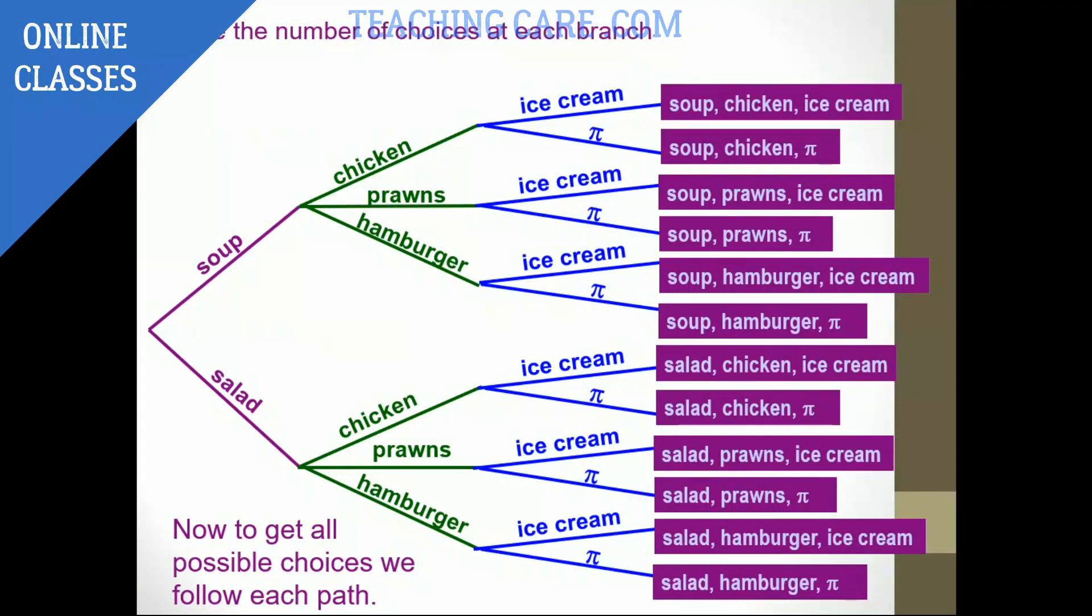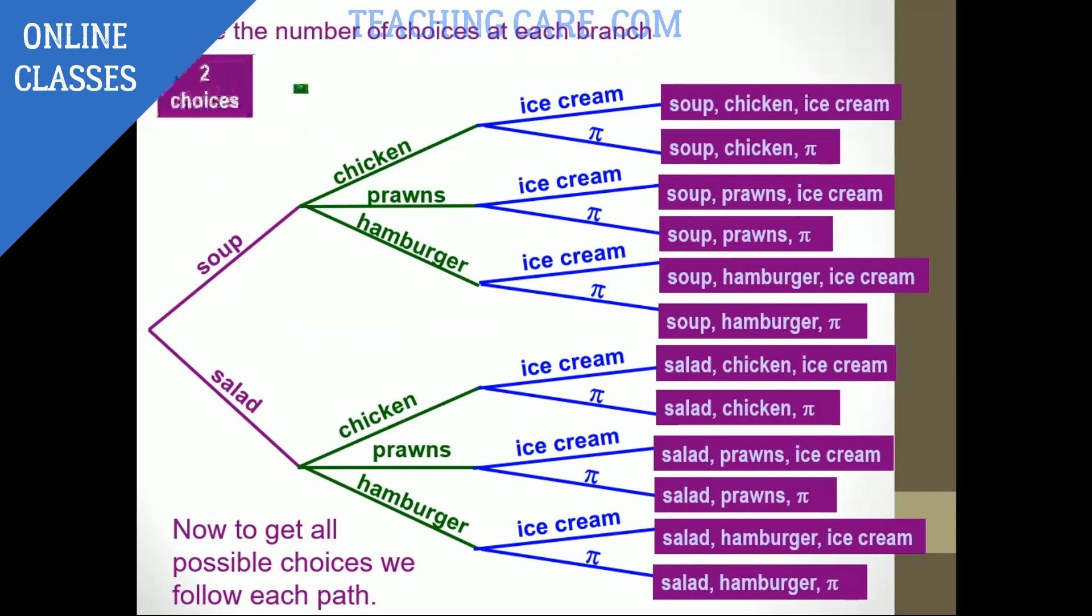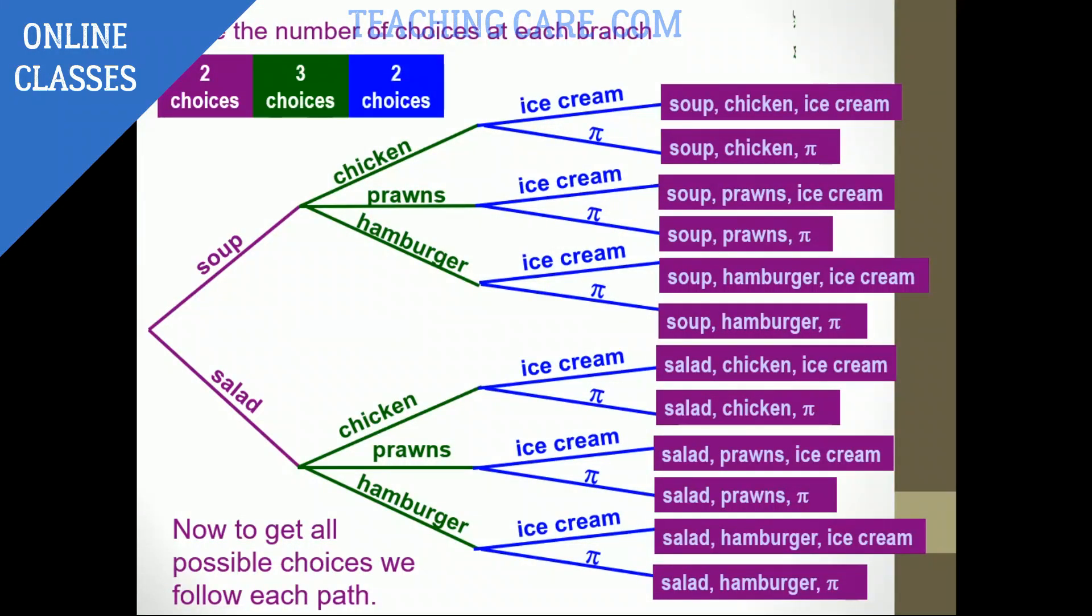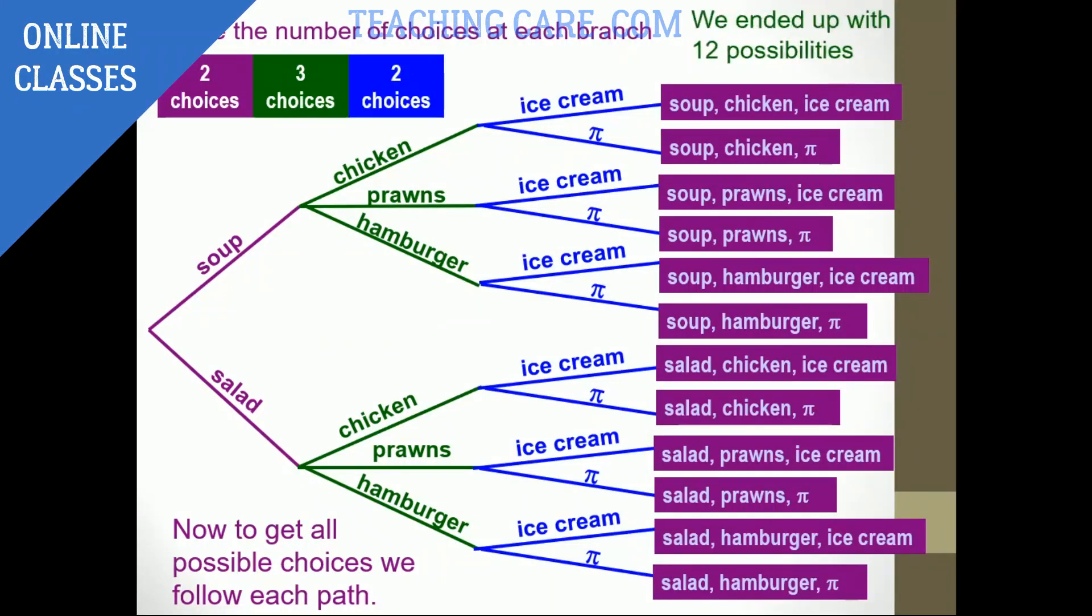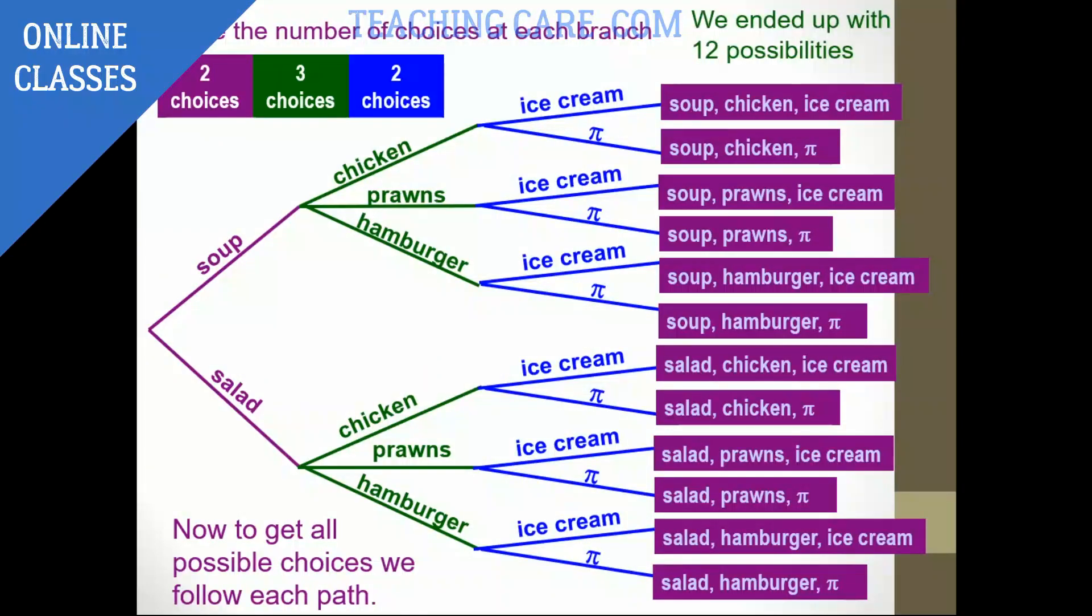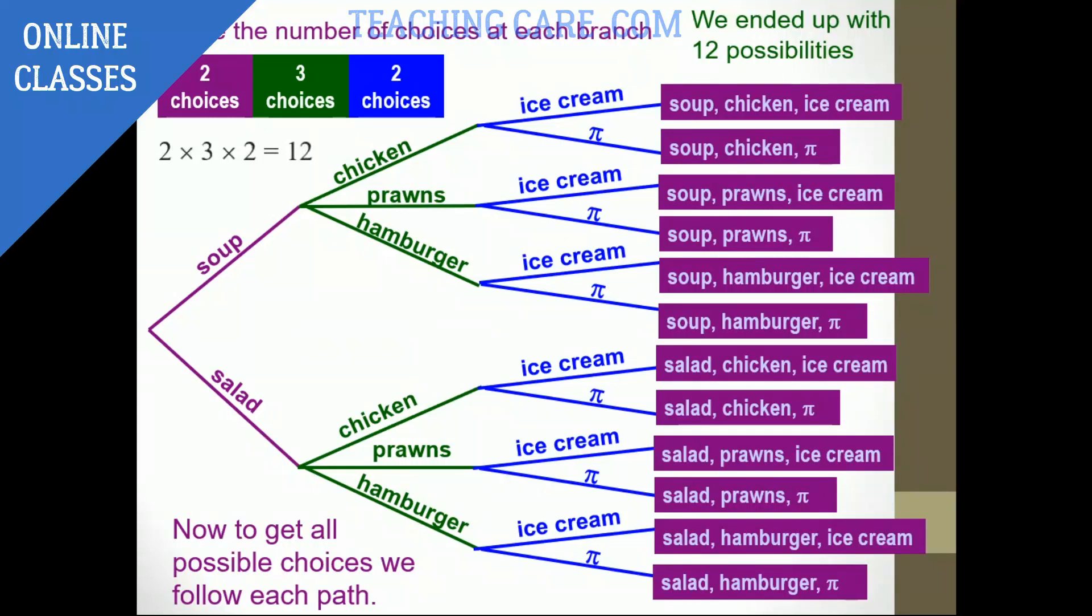So if you notice the number of choices, it's two choices, three choices, then it is two. So it is totally going to be 12. Two times three times two. Totally 12.